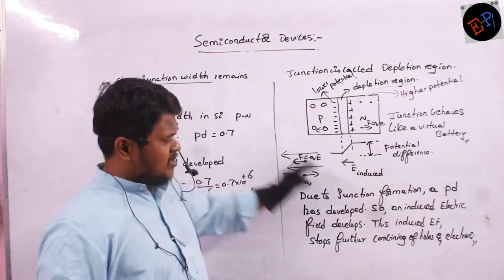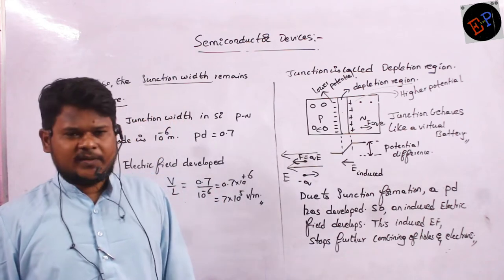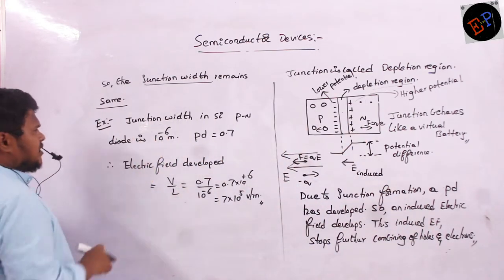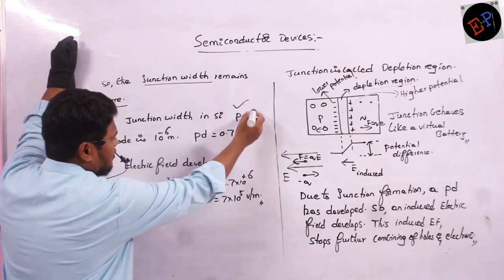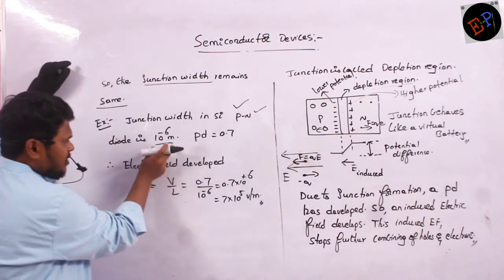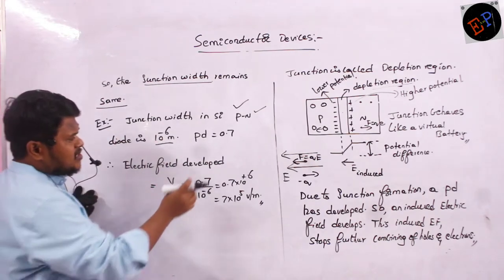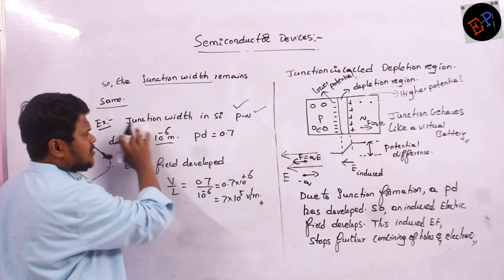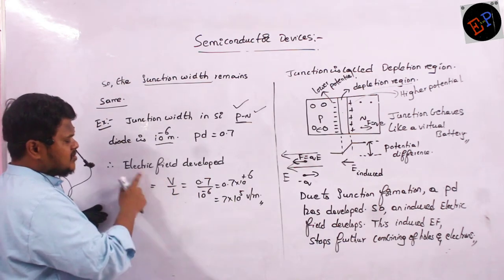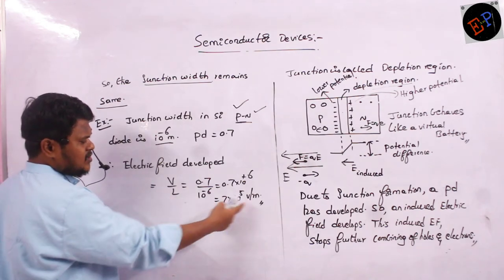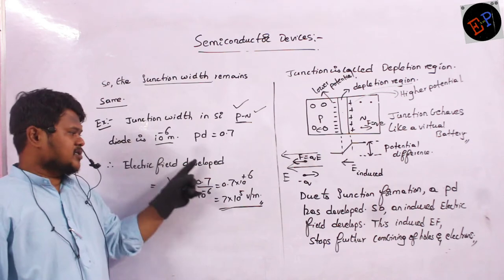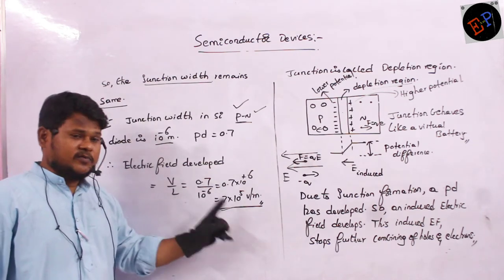Theory part is very important in semiconductors — questions can be asked on this. For example, if I take silicon semiconductor, P and N are both made of silicon. Then junction width will be 10⁻⁶ meters, and potential difference developed will be 0.7 V. The electric field developed is E = V/L = 0.7 / 10⁻⁶ = 7 × 10⁵ V/m. This is a very large electric field, which opposes the recombination of electrons and holes.